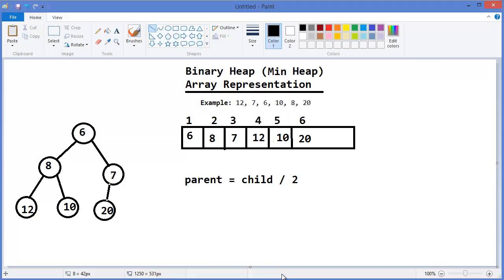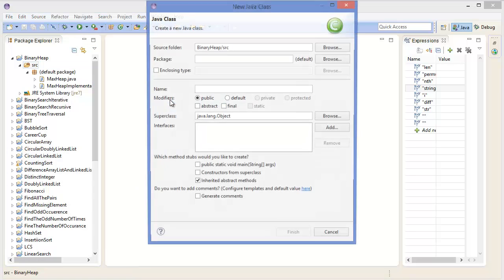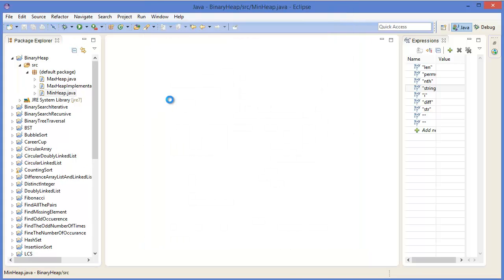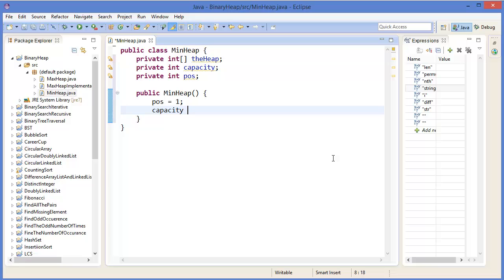Now let's get started with Eclipse. So take a class, let's say MinHeap. Private integer array, the heap. Integer capacity. Integer position. So MinHeap constructor: position equals initially 1, capacity equals let's say 10. Then the heap equals new integer array of capacity.